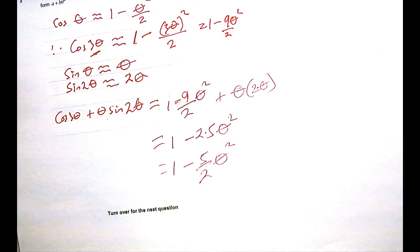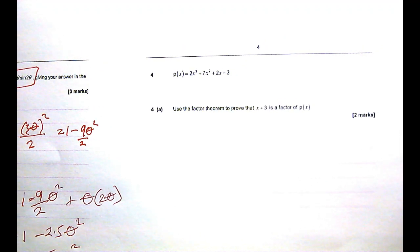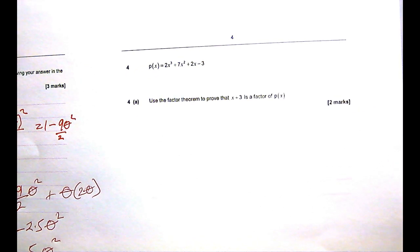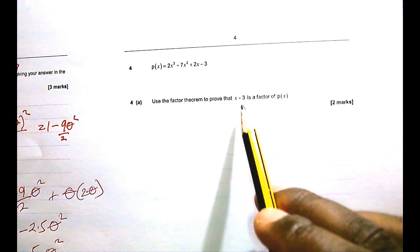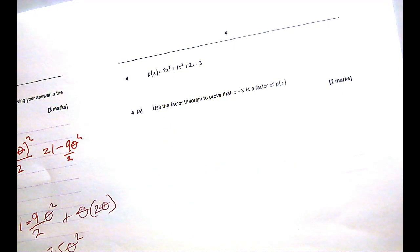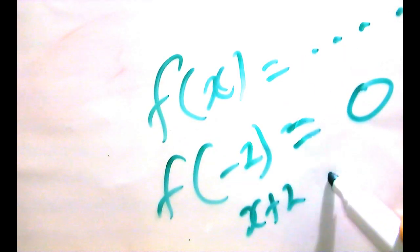Looking at question 4: p(x) equals 2x cubed plus 7x squared plus 2x minus 3. We are told to use the factor theorem to prove that x plus 3 is a factor. The factor theorem says, for example, if f(x) equals something and you substitute minus 2 into where x was, and that gives you 0, then x plus 2 is a factor.